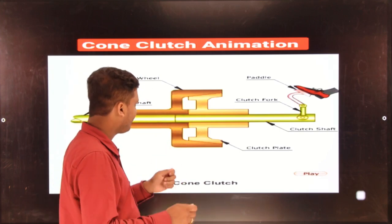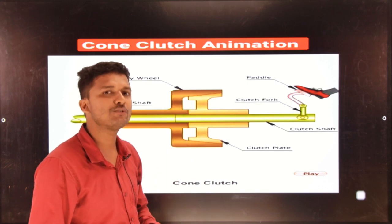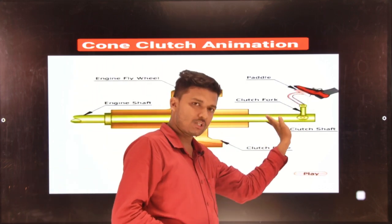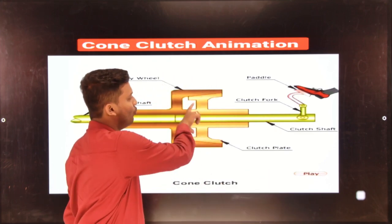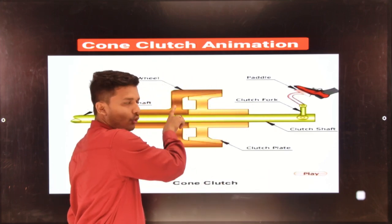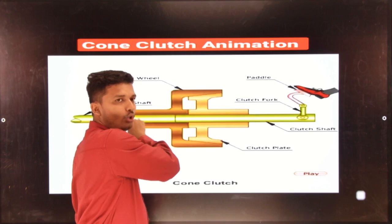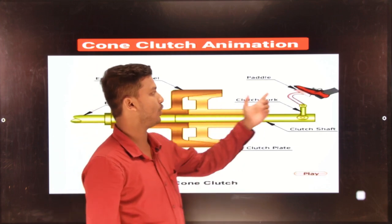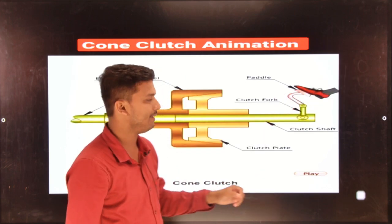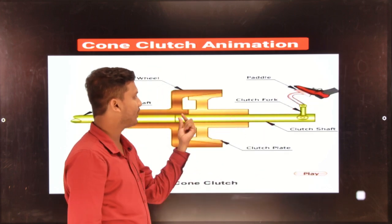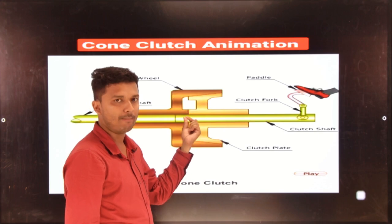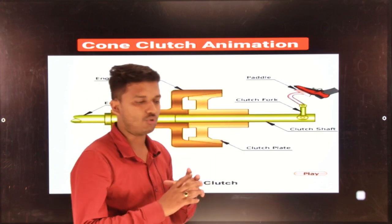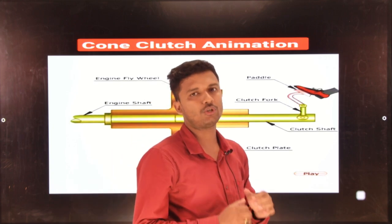This is the difference during disengagement — when the pedal is pressed, the inner cone moves outside of the outer cone that is connected with the flywheel. So no torque is transmitted during disengagement. When the clutch pedal is released, the inner cone moves forward and connects with the outer or female part, and torque is transmitted — that is engagement of the system.